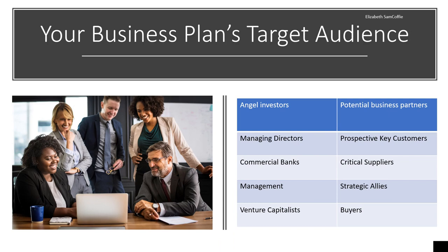For you to know what to write and what information to include in your business plan, you must know your target audience — who are you writing for? It is when you identify who you are writing for that you will know what the right information to include is. The different target audiences for a business plan are: angel investors, managing directors, commercial banks, management, venture capital, potential business partners, prospective key customers, critical suppliers, strategic allies, and all your buyers.